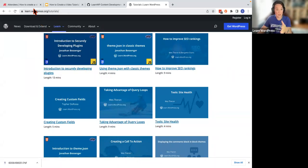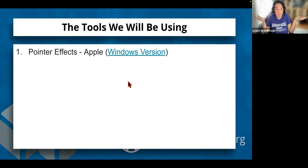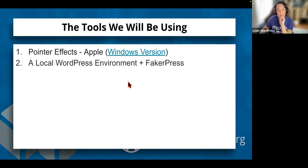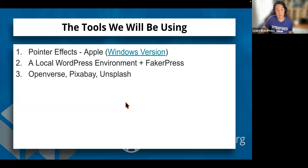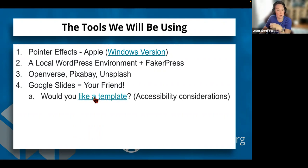You can create a video for learn.wordpress.org. Let's talk about the software we're going to use today. You might notice on my cursor there is a red outline and it's been made bigger, which can be really helpful — this one's optional but something I really like. We're also going to be using a local WordPress environment and FakerPress, which gives you a quick and easy way to create sample content. We're also going to be using open source image searches such as Openverse, Pixabay, and Unsplash, because one of the things I encountered when I first started making videos was: where do I find images I'm allowed to use? Google Slides are also your friends — I have a template for you as well.